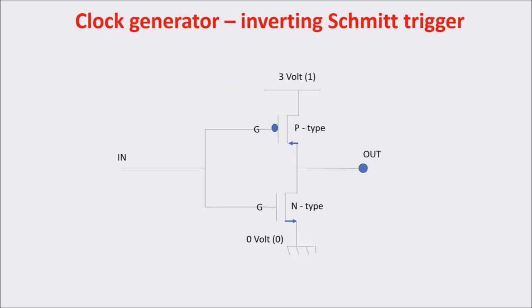This configuration is called the inverting Schmidt trigger and through it we can build a simple oscillator. As inverter we use the CMOS inverter we saw in previous videos. We can see its simple working in this animation.